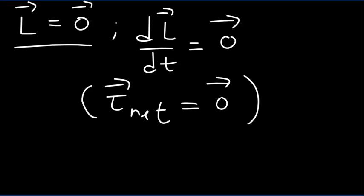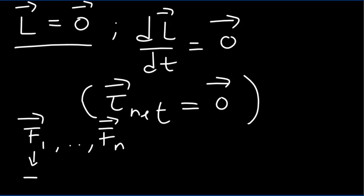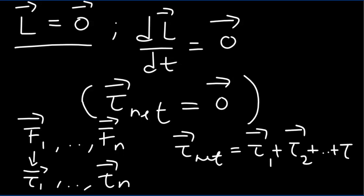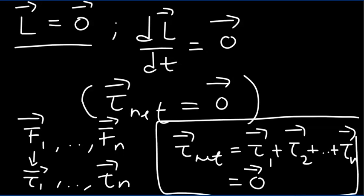Generally, if a system is acted upon by n forces F1 up to Fn, and each force produces a torque tau1 through taun, then the net torque — which is the vector sum of the individual torques — will equal zero. This is the second condition for static equilibrium.